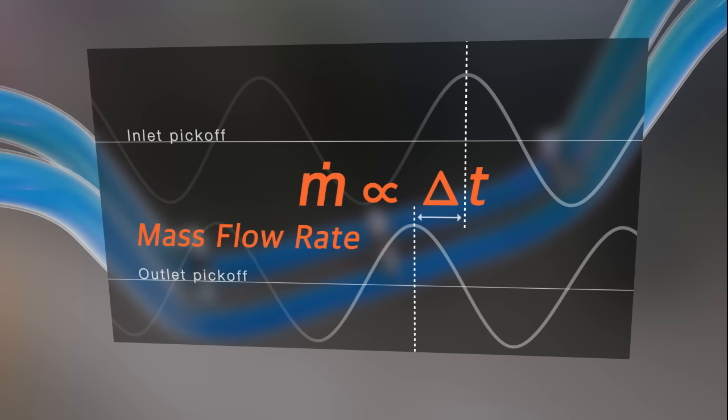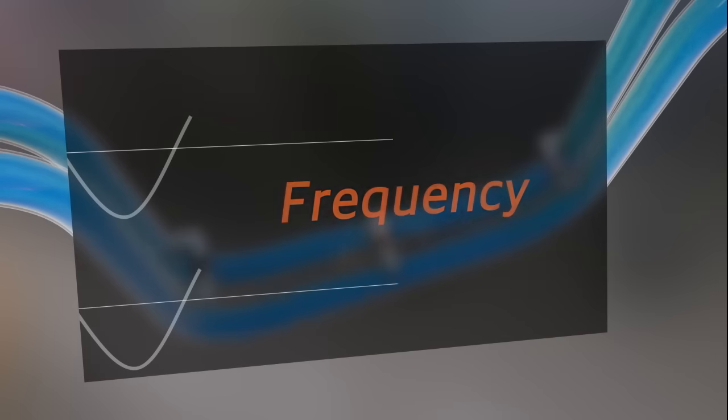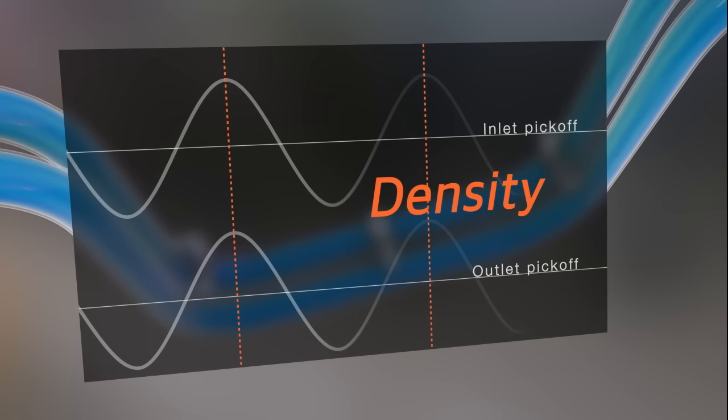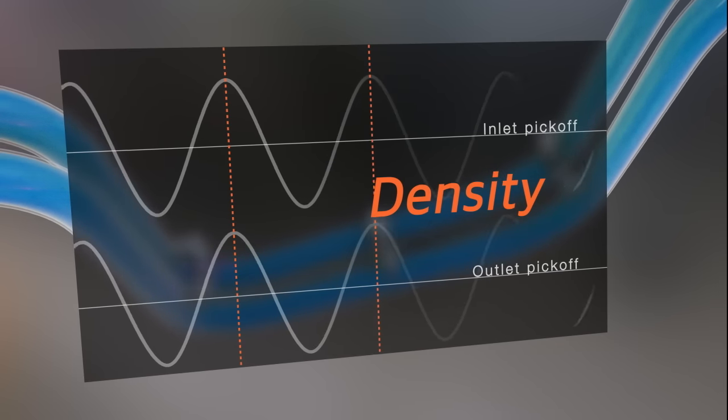While the sine wave phase shift indicates mass flow, the wave frequency indicates density. When the liquid density changes, the vibrating frequency of the tubes also changes.